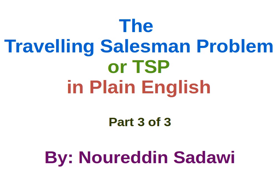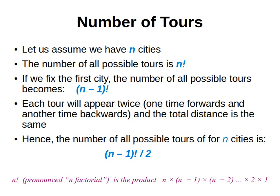Welcome back. This is the last video of the series. In the last video we learned how to compute the number of possible tours. If we have n cities, we can have n factorial possible tours, but if we fix the first city it becomes n minus one factorial. And since the same tour appearing twice in opposite directions has the same distance, we consider them as one, so we divide by two.